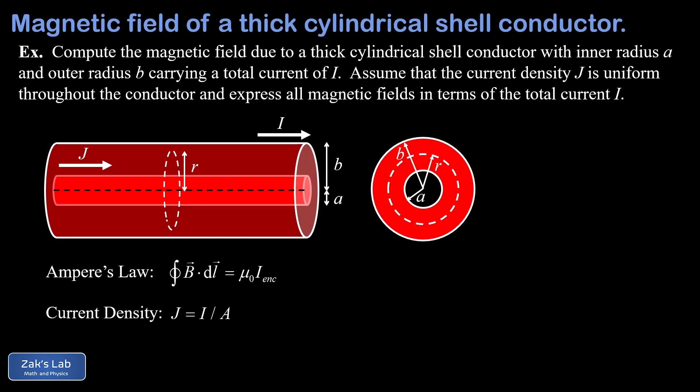In this video we're using Ampere's law to compute the magnetic field generated by a current running through a long thick cylindrical shell conductor. The thick conductive cylindrical shell has an inner radius of a and an outer radius of b. Inside the radius a it's hollow, with no conductive material, as clearly visible in the face-on view where the current is coming straight out of the page.